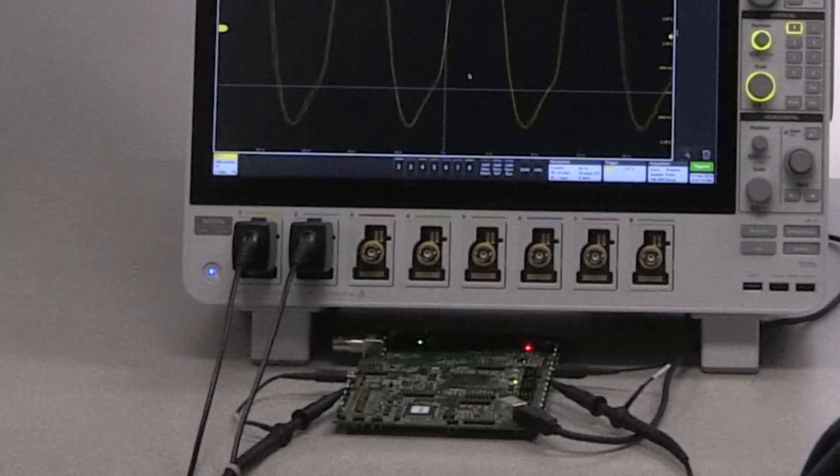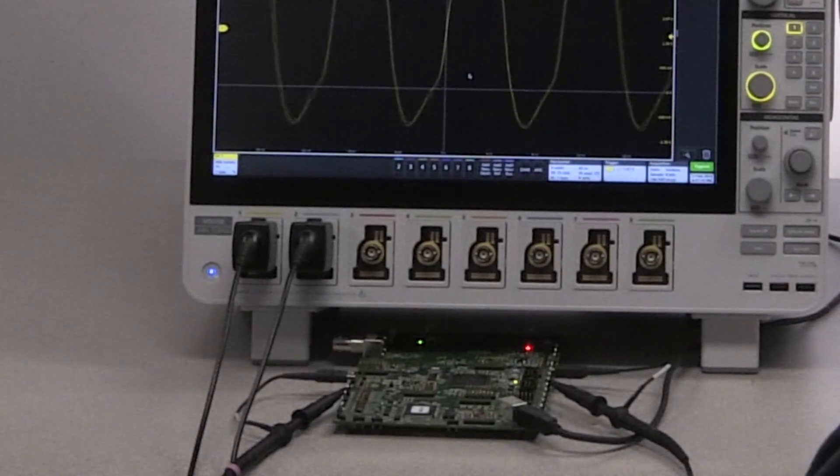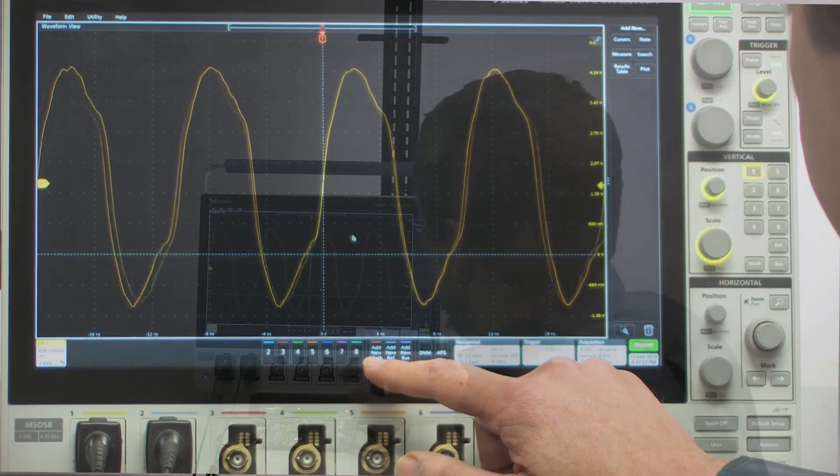Today we're going to take a look at a spread spectrum clock that modulates from 97 megahertz to 100 megahertz, and we'll take a look at it using both traditional FFT and Spectrum View to see how they are different.